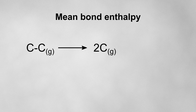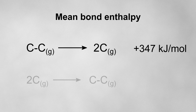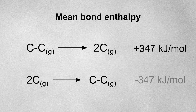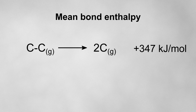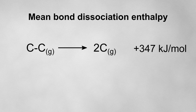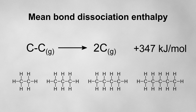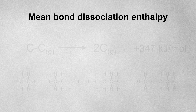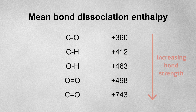For instance, under standard conditions, the mean bond enthalpy for breaking one mole of gaseous carbon-carbon single bonds is +347 kJ/mol. But the mean bond enthalpy for forming one mole of gaseous carbon-carbon single bonds is −347 kJ/mol — it's the same process, just going in opposite directions. When we refer to the breaking of bonds, the mean bond enthalpy is often called the mean bond dissociation enthalpy. It's always a mean value because it's averaged across many different similar molecules, since a bond's strength may vary slightly depending on its environment. A larger value indicates a stronger covalent bond.